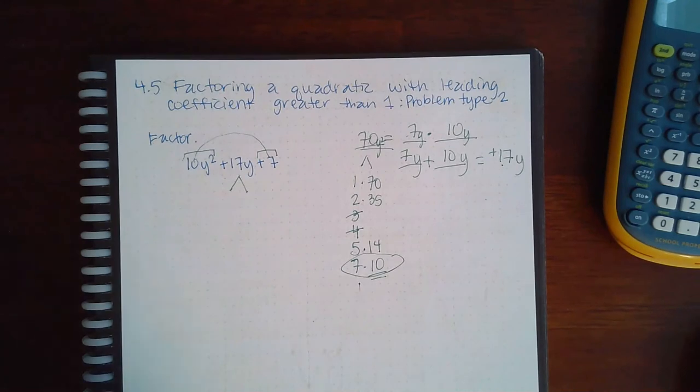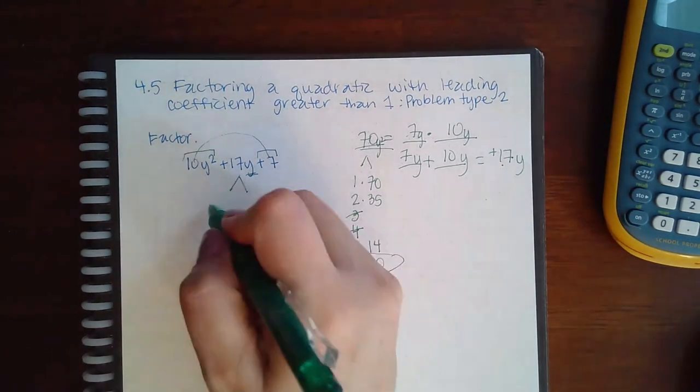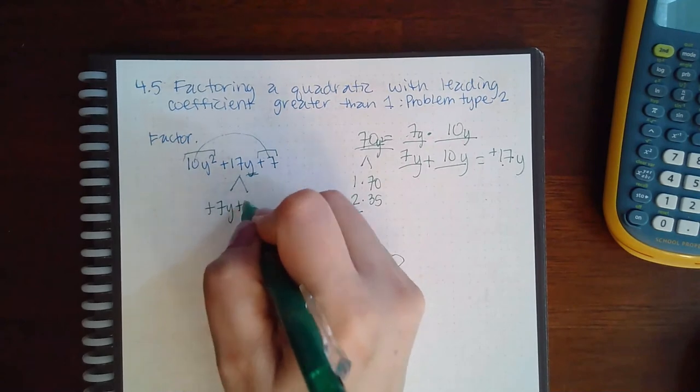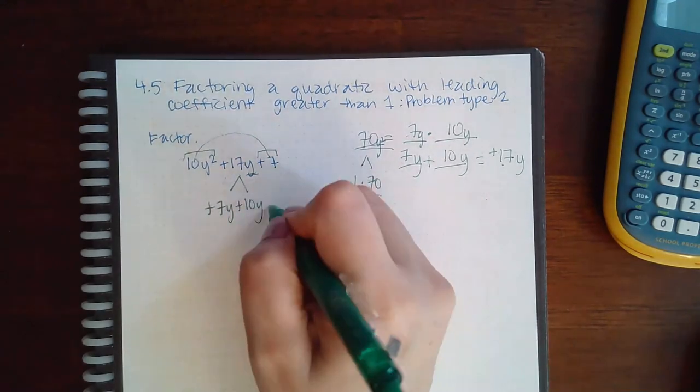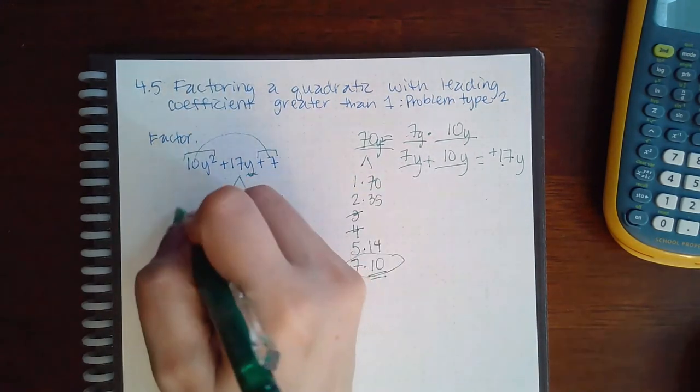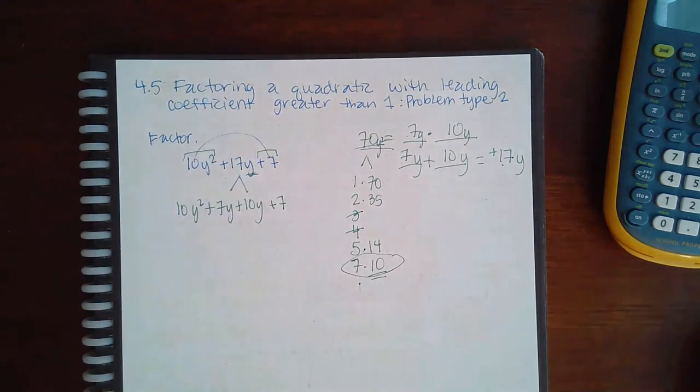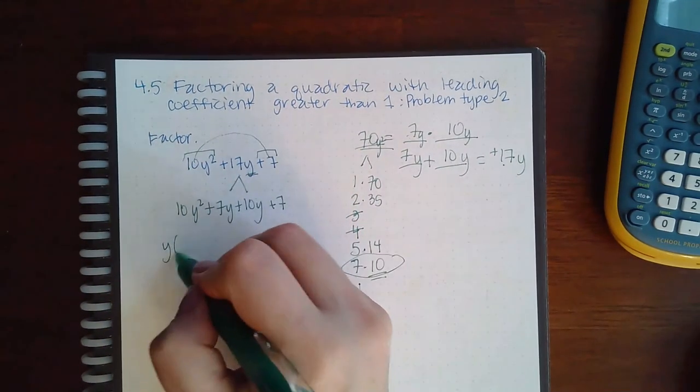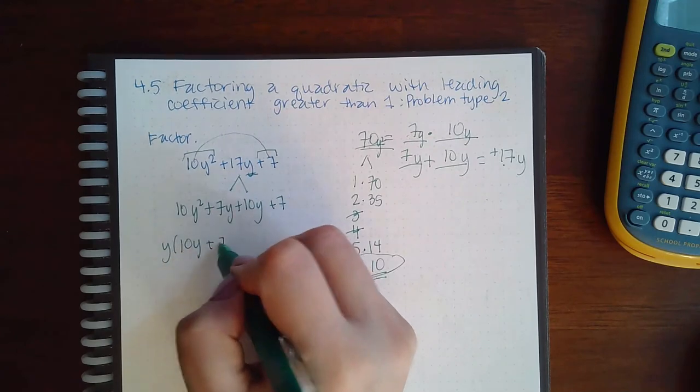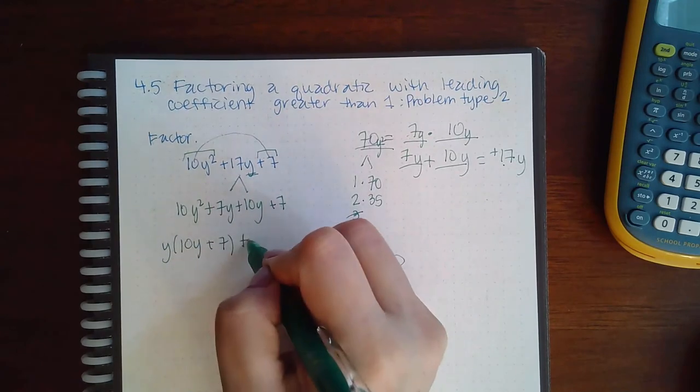Okay, so that would be positive 7y and positive 10y. And then bring down the plus 7 on the end, bring down the 10y squared on the end. These two have a y in common, so 10y plus 7. These guys have nothing in common, so factor out a 1. You do have to bring down the middle sign.